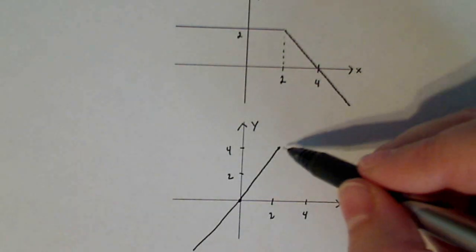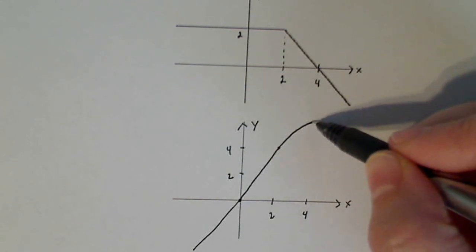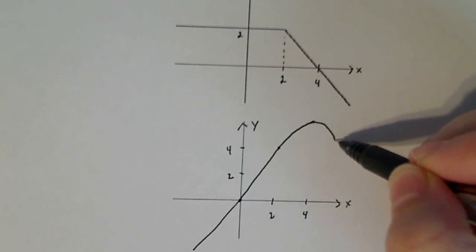So from here, I know that I have to increase up until four in a parabolic way, and then I have to decrease after four in a parabolic way.